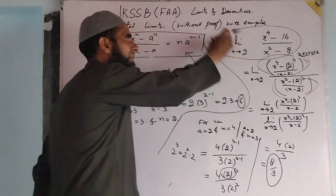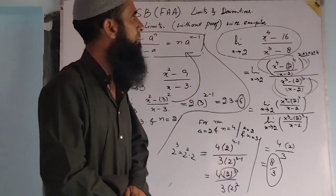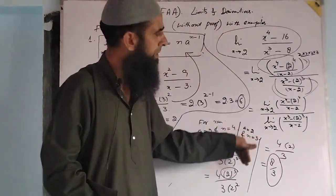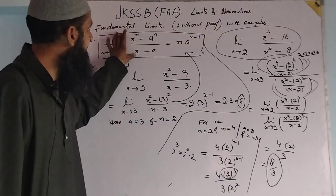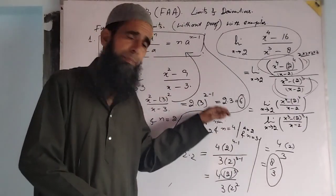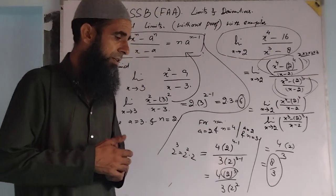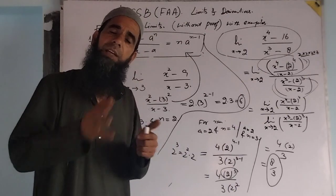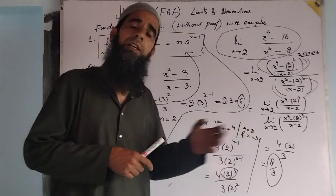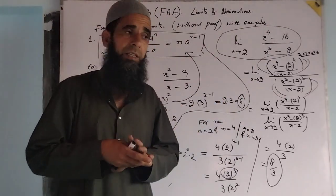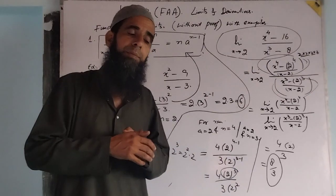Therefore, the limit of this particular function as x tends to 2 is 8 by 3. Dear students, you can easily verify this type of limit by using the fundamental limit. This is very important and this type of example can appear in your exam. Please subscribe to the channel so every next video reaches you first, and share the video so your colleagues can also benefit. In the next video, we will discuss another fundamental limit with examples. Thank you, have a nice day.